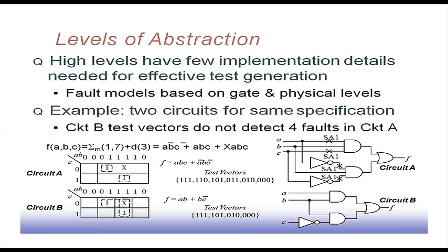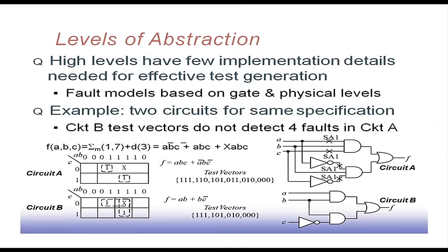Fault models based on gate and physical level: when we consider gate level, we have some fault model. When we go to physical level in terms of transistors and wires, we have a more detailed view of the system. The types of faults detectable by a lower-level fault model may not be possible with a higher-level fault model. But the number of faults at lower levels becomes huge, making it difficult to generate test patterns for all those faults. A higher-level model can help generate test patterns that are much more compact in nature.